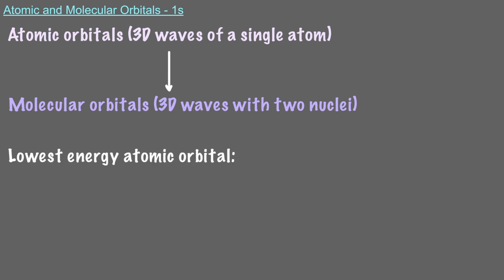The lowest-energy atomic orbital is essentially a spherical 3D wave with a nucleus in a node at the center. This lowest-energy spherical atomic orbital with one nucleus is called 1s. It's important to remember that atomic orbitals are the shapes that they are because there's only one nucleus.